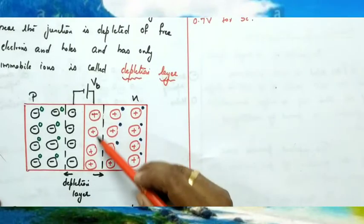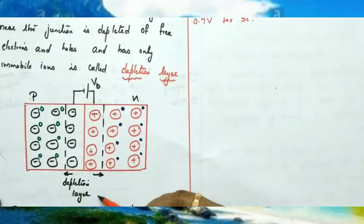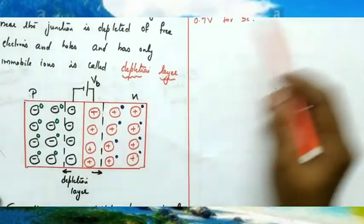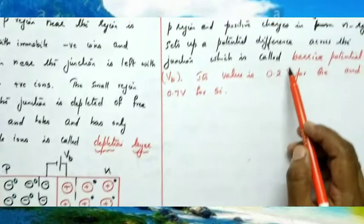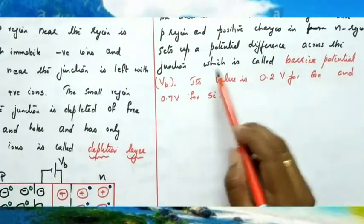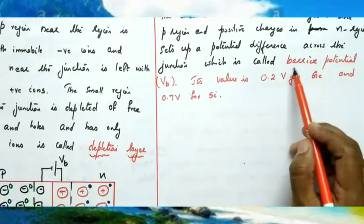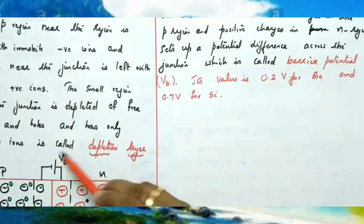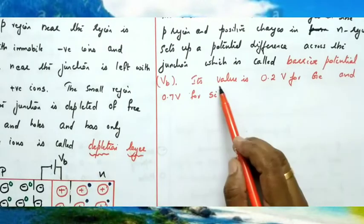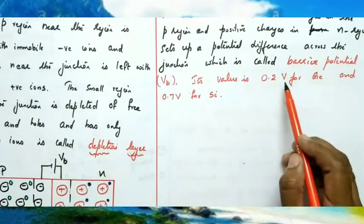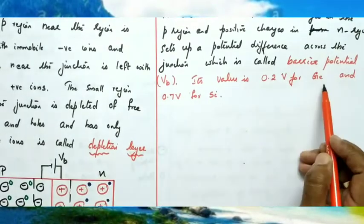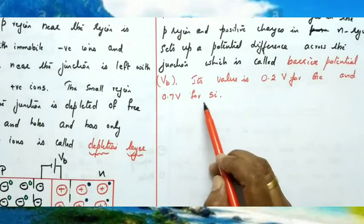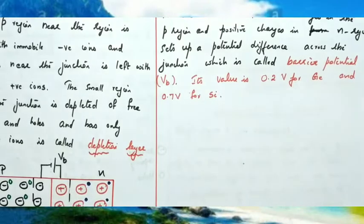The accumulation of positive charges in the N region and negative charges in the P region sets up a potential difference across the junction called the barrier potential. It is represented by V_B and its value is 0.2 volts for germanium and 0.7 volts for silicon.